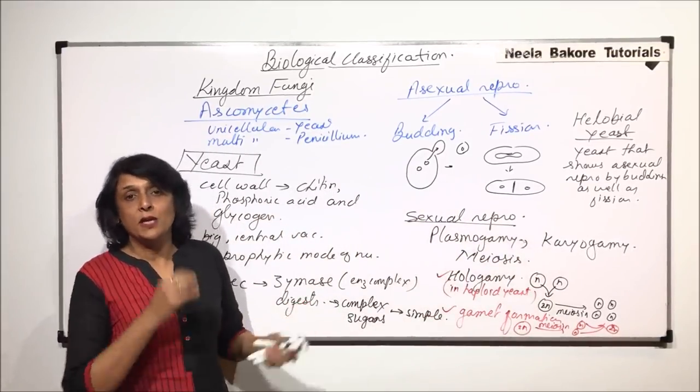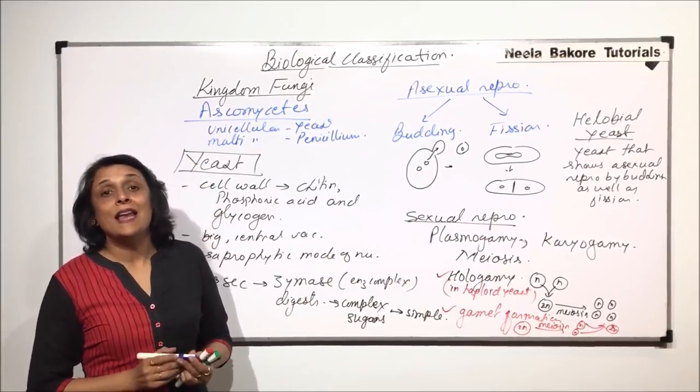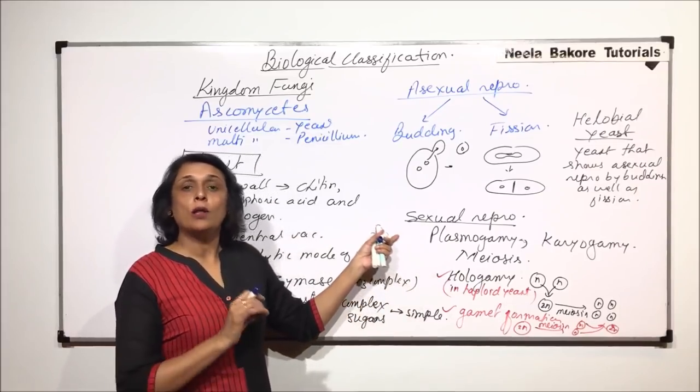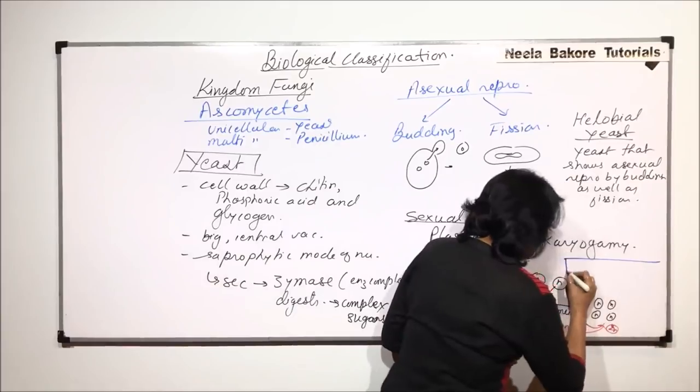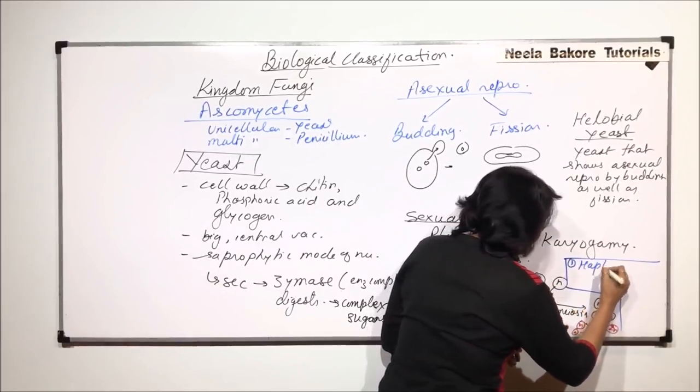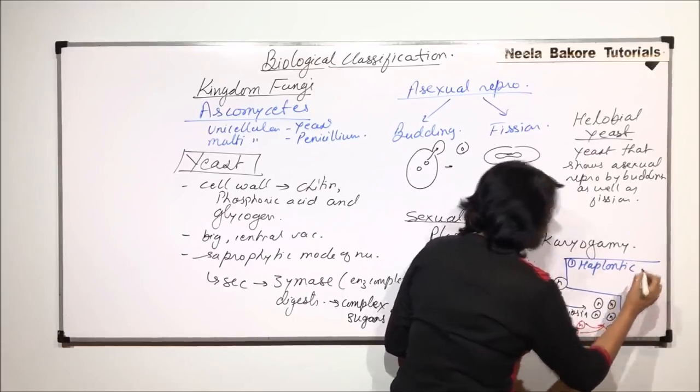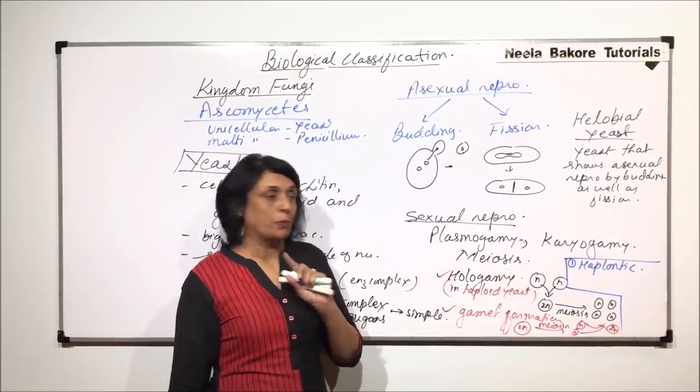Yeasts, different species of yeast, they exhibit different types of life cycles. So, in yeast we find all three types of life cycles. That means, the life cycles which are seen, one is haplontic. That means, most of the stages are in the form of a haploid cell. Only one stage would be diploid.